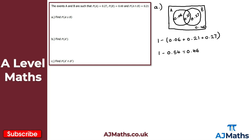For the probability of A union B — that's everything inside both circles — we add 0.06 plus 0.21 plus 0.27. We already computed this sum as 0.54. So the probability of A union B is 0.54.